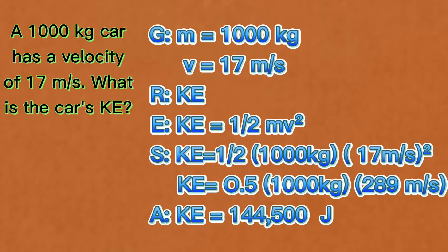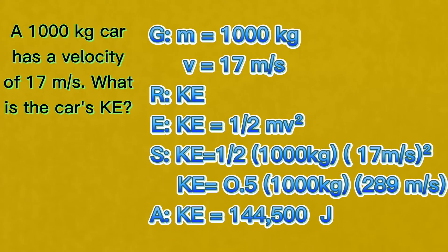Then copy the mass, which is 1000 kilograms, and multiply 17 meters per second by itself. 17 times 17 equals 289 meters per second. And the car's kinetic energy is 144,500 joules.